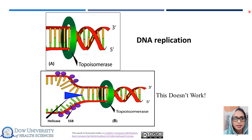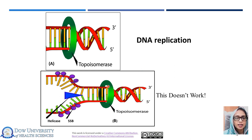Supercoiling can be created or relaxed by enzymes called topoisomerases, an example of which is DNA gyrase. Topoisomerases relax supercoiled DNA by breaking either a single strand or both strands, allowing DNA to rotate into a relaxed molecule, then rejoining the strands. As DNA polymerase moves forward, the double helix is continuously unwinding ahead of the enzyme to expose further lengths of single-stranded DNA that will act as template.